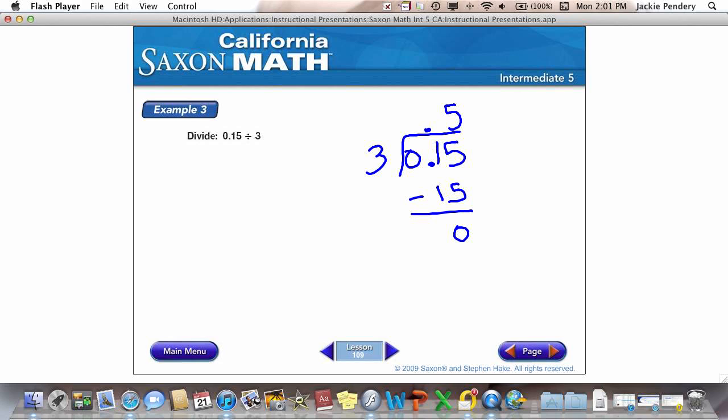Except not really. Now, notice that when I divided, 3 went into 15 hundredths. So, the 5 went above the 5 in the 15 hundredths. Leaving a space above the tenths. I can't, because there is a decimal here, I can't leave this as 5 tenths or half. I have to put a 0 as my placeholder above the 1.